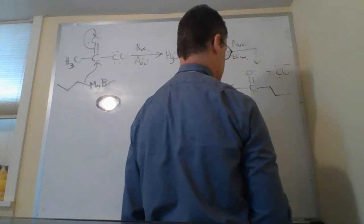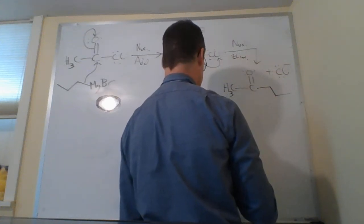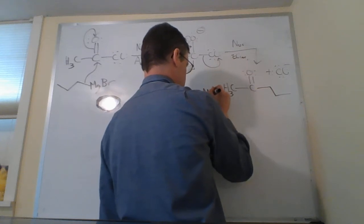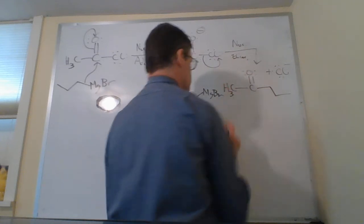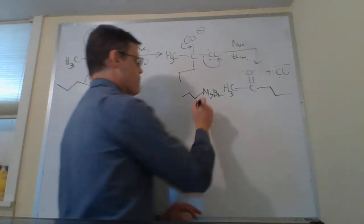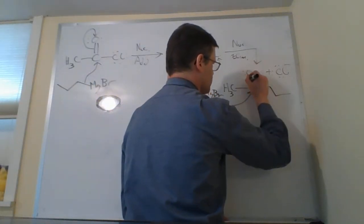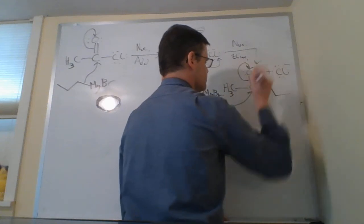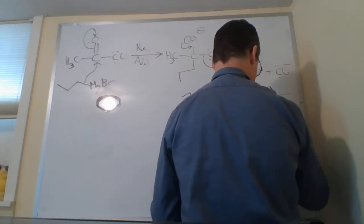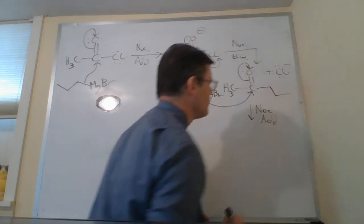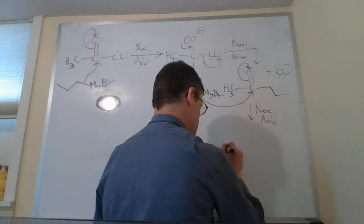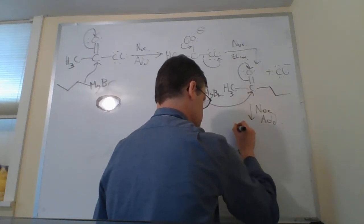Then a second nucleophilic addition is going to happen. We've got a second equivalent of this propyl magnesium bromide (one, two, three carbons). It's going to do that nucleophilic addition, and we get another tetrahedral intermediate.